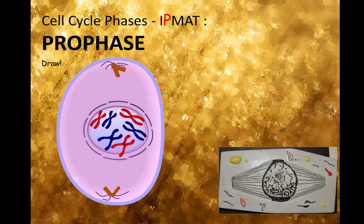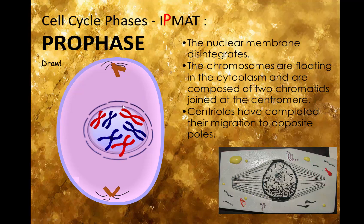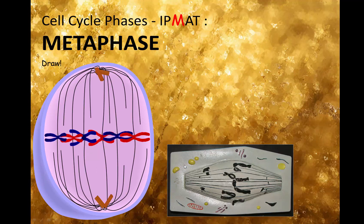The first phase of the actual mitosis is called prophase — the P in IPMAT. This is what I would like you to draw. We see asters starting to form. The nuclear membrane starts to degenerate, and chromosomes are floating in the cytoplasm, composed of sister chromatids. The centrioles have completed migration to the poles and are starting to make their microtubules. At this time they're called asters because they look like stars. In a plant cell, these microtubules come from a point in the cell rather than from an organelle.